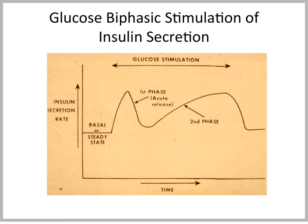When insulin is secreted, it is secreted in a biphasic manner. The biphasicity comes from the fact that when glucose increases in the beta cell, the secretory granules that are closest to the plasma membrane release their insulin first, and then new secretory granules get recruited from the cell interior and also move to the plasma membrane to release their contents. So we have a first phase from the secretory granules close to the plasma membrane, and a second phase from the secretory granules recruited from the cell interior.